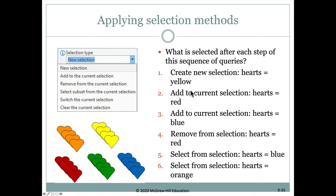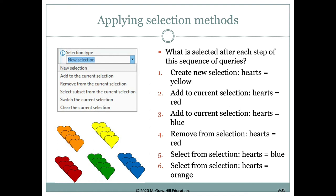Let's look at some examples. We create a new selection where hearts equal yellow — that selects all the yellow hearts. Then we add to the current selection where hearts equal red, giving us all yellow and red hearts selected. Then we add to the selection where hearts equal blue, so now yellow, red, and blue hearts are all selected. Then we remove from selection where hearts equal red, leaving just the yellow and blue hearts selected.